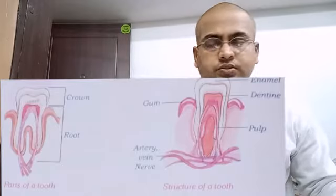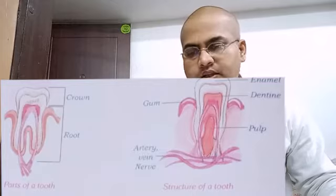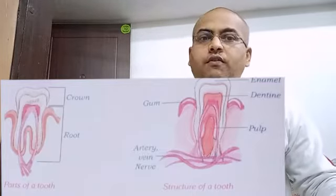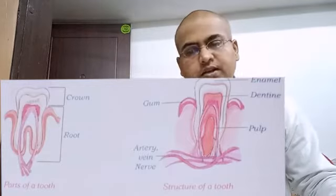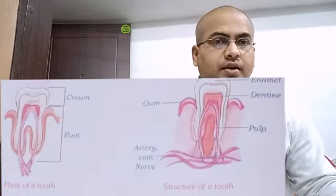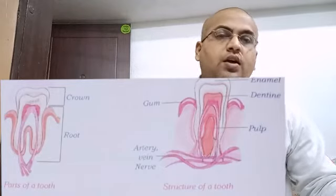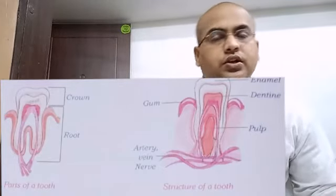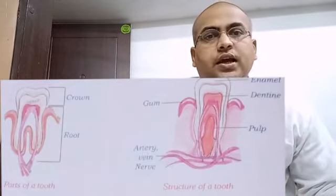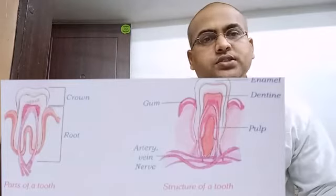Question number two: List three ways in which bacteria are useful to us. Number one, formation of curd from milk. Number two, in the digestion of roughage. Number three, in the formation of vitamins in the human stomach. These bacteria are also used in the leather industry.